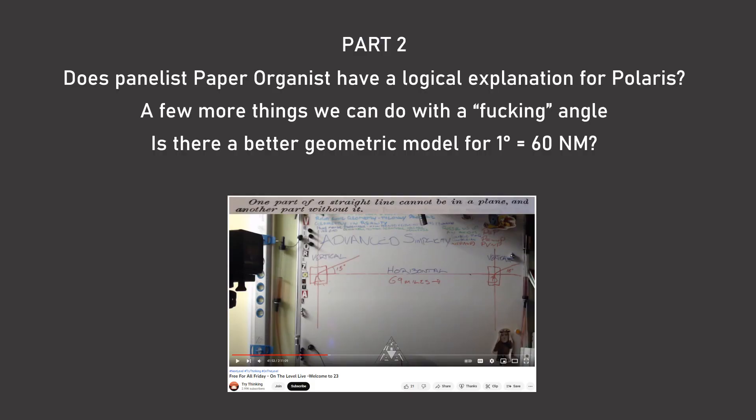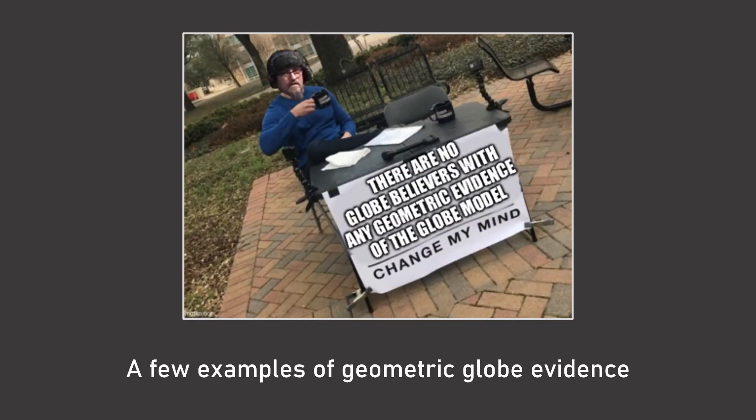So in part two, I'll take a look to see if the on-the-level panelist paper organist had a logical explanation for Polaris. Also, a few more things that we can do with the fucking angle. And is there a better geometric model for one degree equals 60 nautical miles? Also, I'll throw in a few examples of geometric globe evidence to show Bev that yes, there are globe believers with geometric evidence of the globe model.